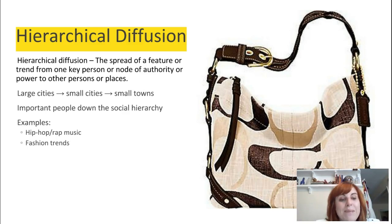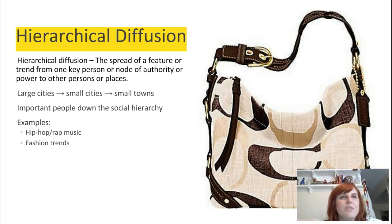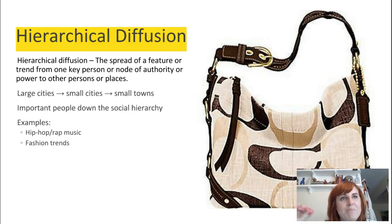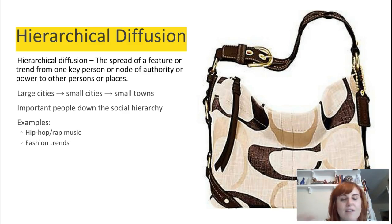Or sometimes important people will spread things — that's still hierarchical diffusion. If somebody in power makes it a law that on Tuesdays you have to eat salmon for dinner, that important person's directive spreads down the chain of command. Other examples: hip-hop and rap music started in big cities and then spread. Fashion trends often spread that way too.